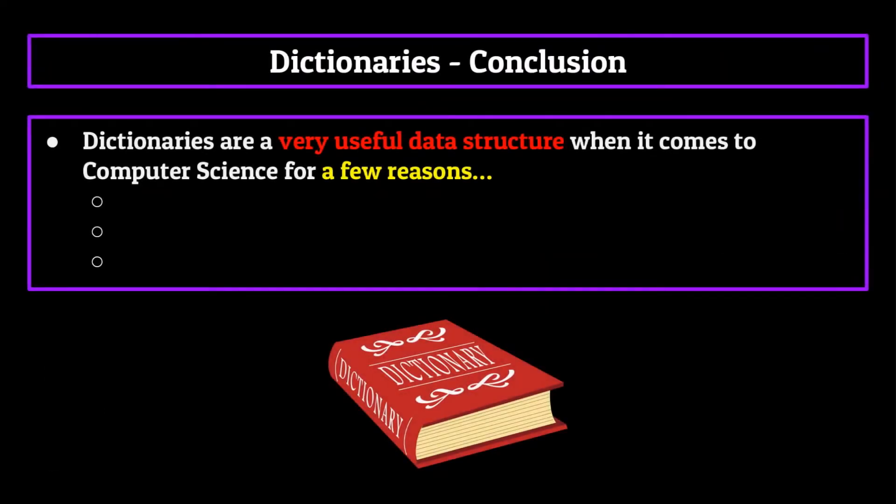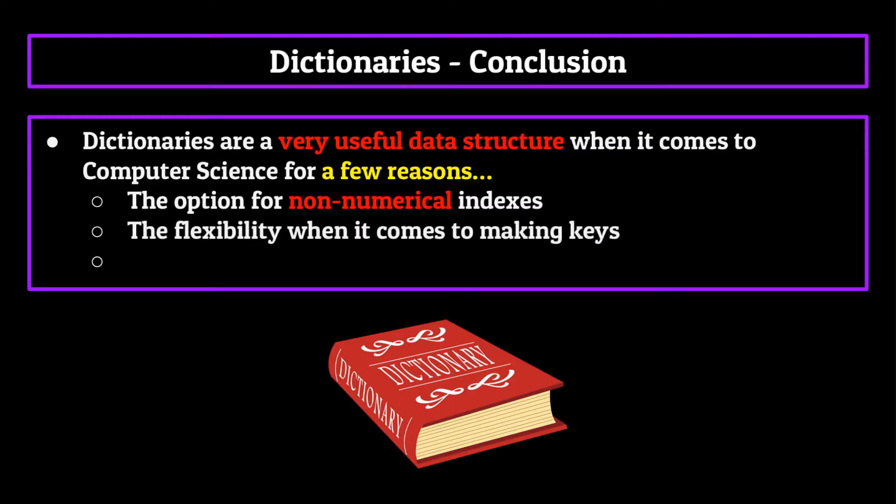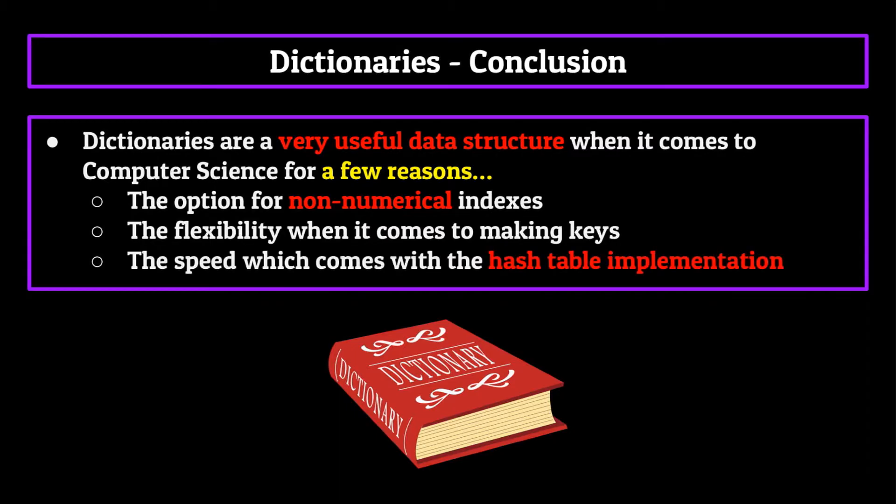Dictionaries are a very useful data structure when it comes to computer science for a few reasons. They differ from the rest in that they don't use a numerical index to retrieve values. The fact that the keys and the key value pairs can be a range of types from strings to integers to chars and so on makes it easier to consolidate the data. And this combined with the hash table implementation allows for super quick utilization, and is sure to come in handy on any program that you write.